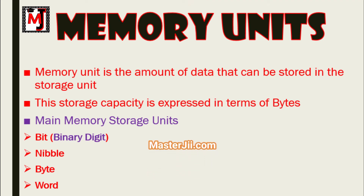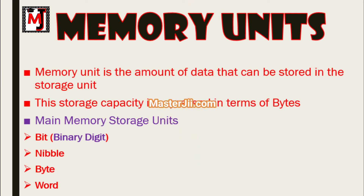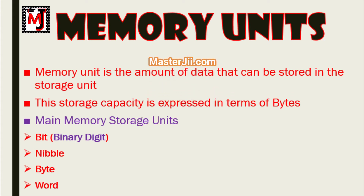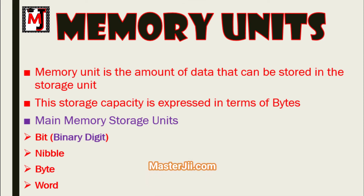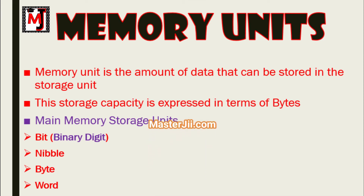Then nibble — a group of 4 bits is called a nibble. And then byte — a group of 8 bits is called a byte. A byte is the smallest unit which can represent a data item or a character.